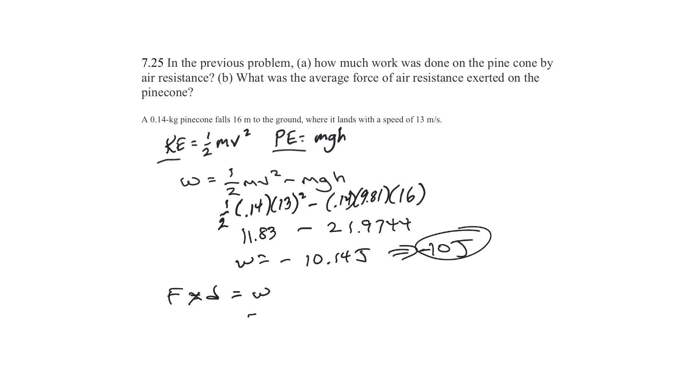We know that the work is negative 10. We know that the distance, it fell 16 meters. So, negative 10 divided by 16. What is that? 0.63 joules. Hope it's making sense.